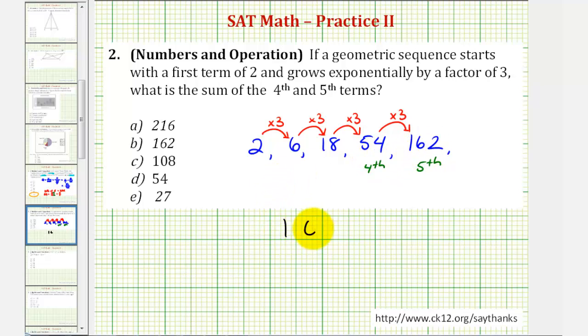One hundred sixty-two plus fifty-four is two hundred sixteen, and therefore our answer is A. I hope you found this explanation helpful.